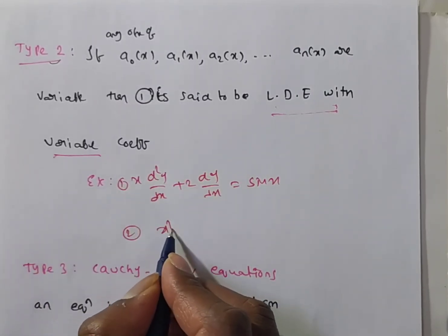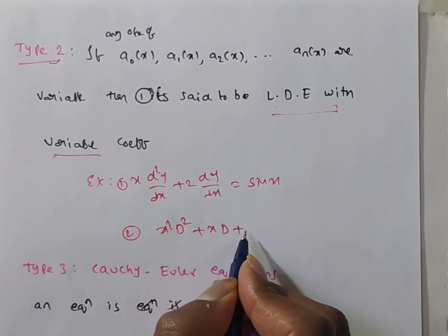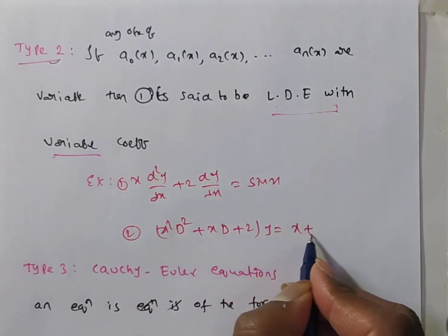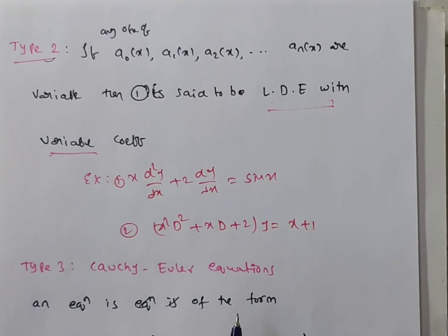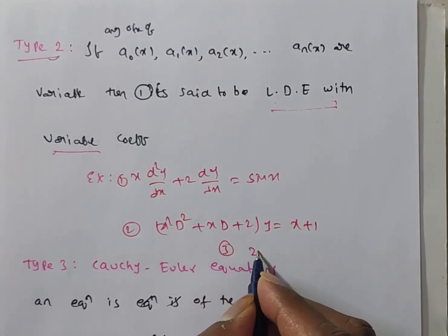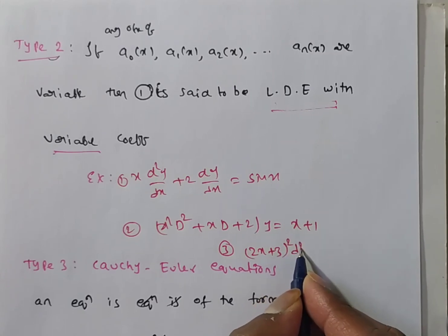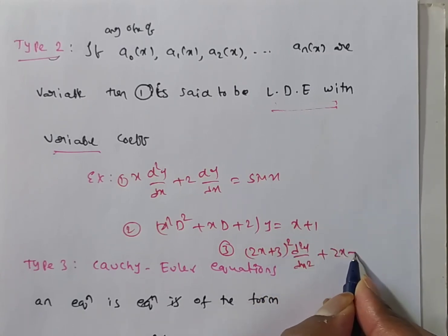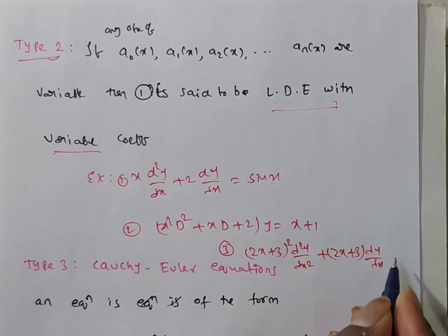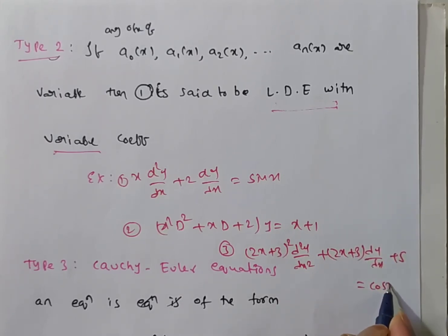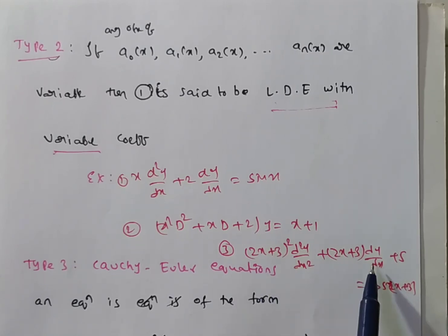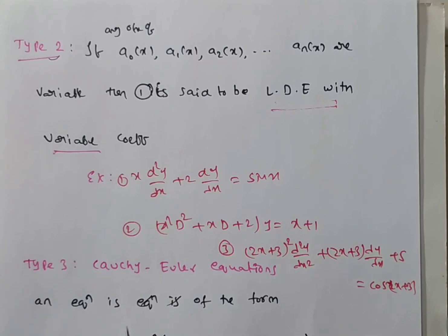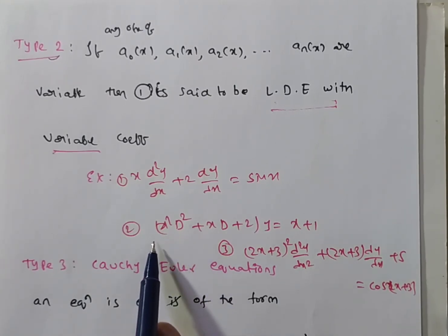One more example: (x²D² + xD + 2)y = x + 1 is also a linear differential equation with variable coefficients. Another example: (2x + 3)² d²y/dx² + (2x + 3) dy/dx + 5 = cos x is also an example of a linear differential equation with variable coefficients, where the order of the derivative and the index of x are known.